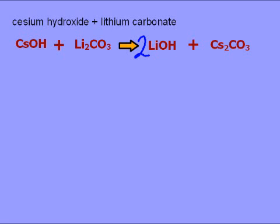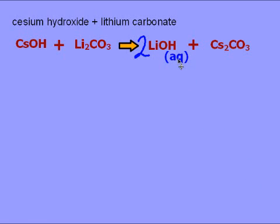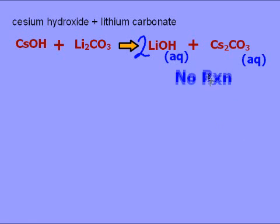A double displacement reaction gives us products LiOH — lithium is +1, OH is −1 — and Cs2CO3 for the other product. Now we check our solubility rules. Lithium is a group one metal — the rule says all group one metal compounds are soluble, so this one is aqueous. For cesium, it's the same thing — it's in group one, so that also is soluble, so we put 'aq' there.